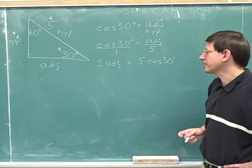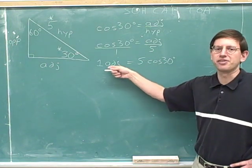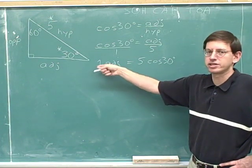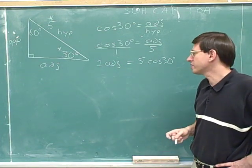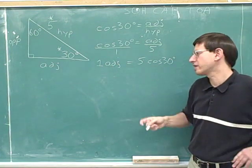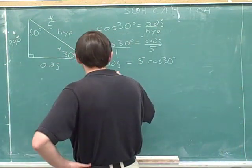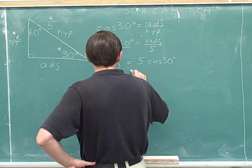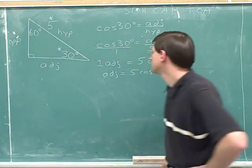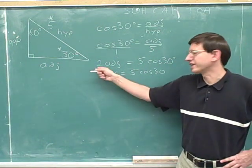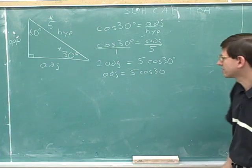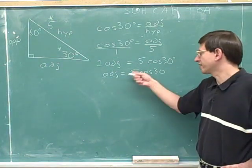Now remember, our goal is to get this adjacent term by itself. We haven't quite accomplished that because the adjacent term still has the number 1 next to it. But that shouldn't bother us very much, because 1 times anything is just that thing — 1 times the adjacent side is just the adjacent side. So we don't really have to write this number 1 separately. One times the adjacent is just the adjacent. Now we're ready to plug into our calculator.